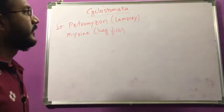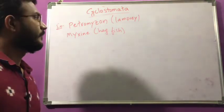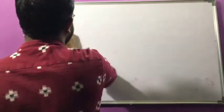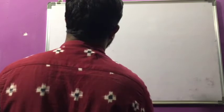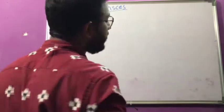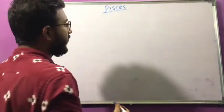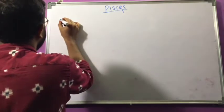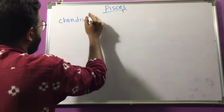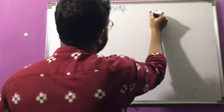Now we will come to the superclass Fishes. In that we have class Chondrichthyes and class Osteichthyes. The superclass Fishes is divided into these two different classes.